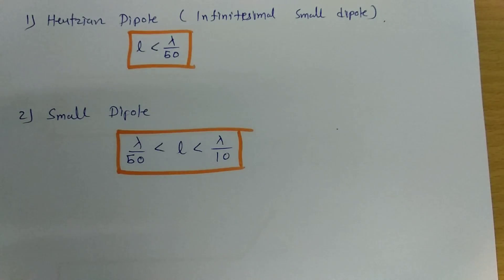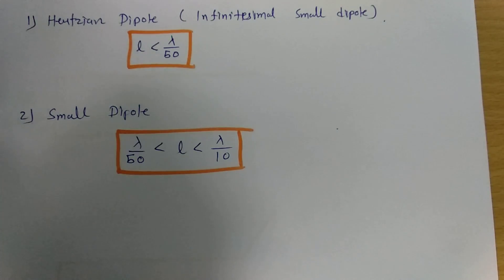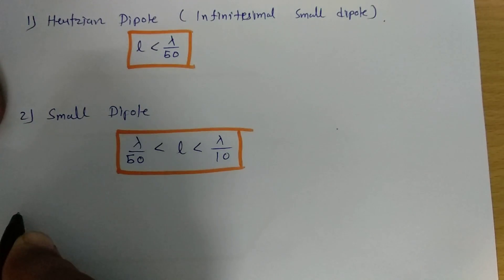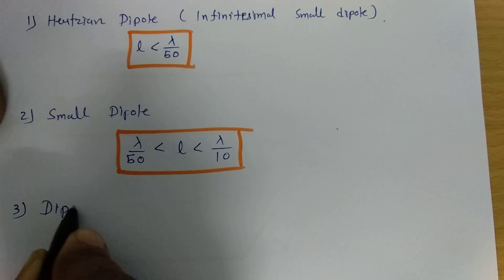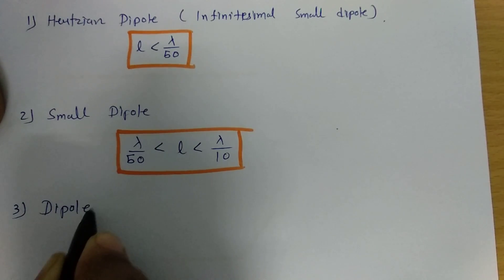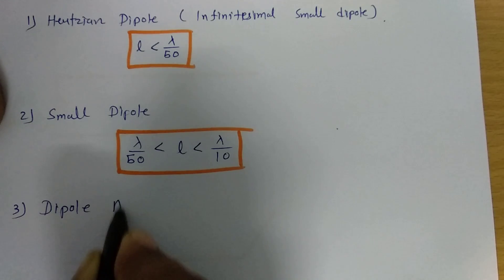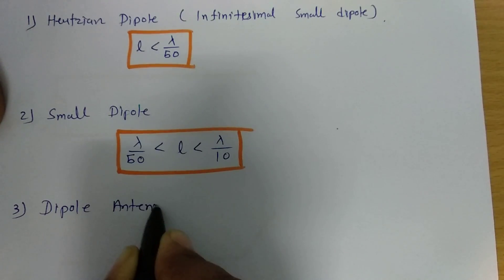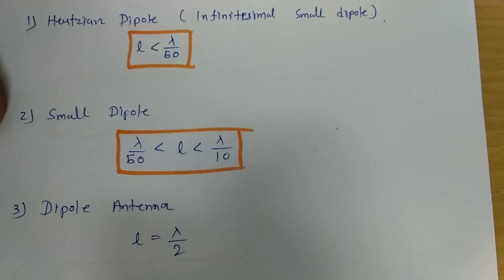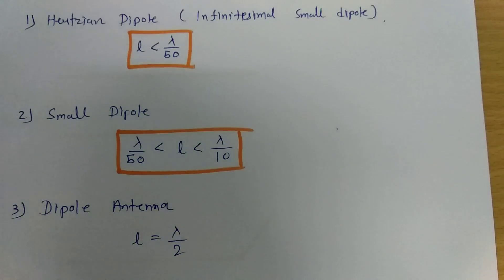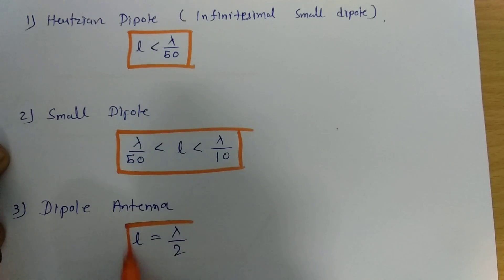The normal dipole antenna, which we all know, is having length lambda by 2. The length of a dipole antenna with effective radiation will be lambda by 2.